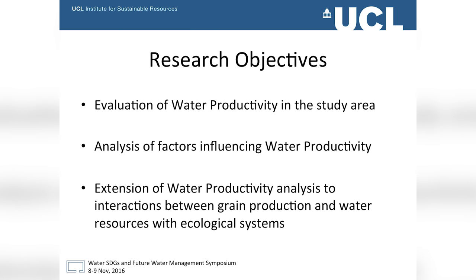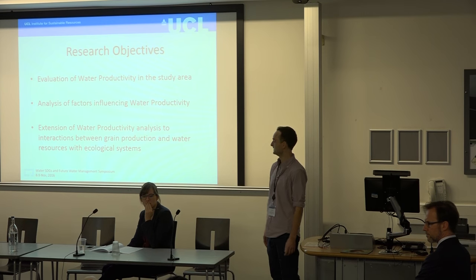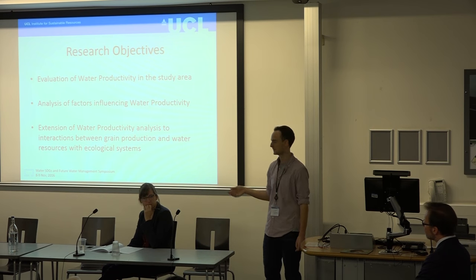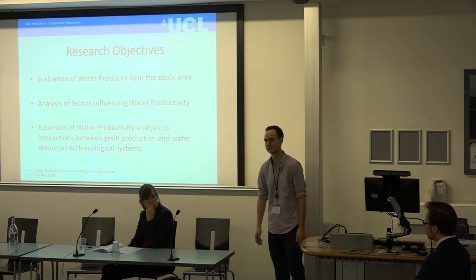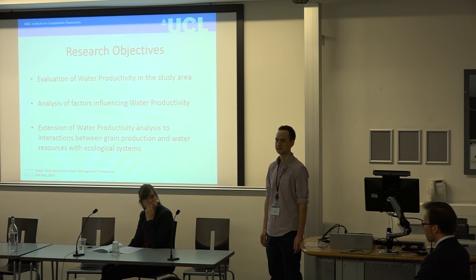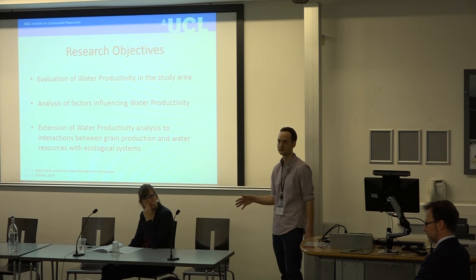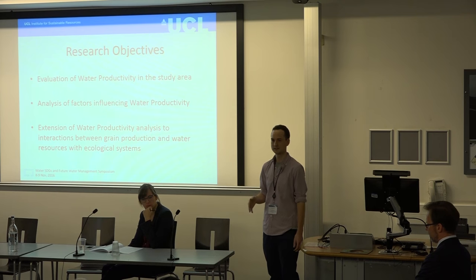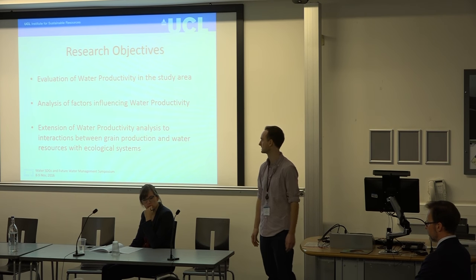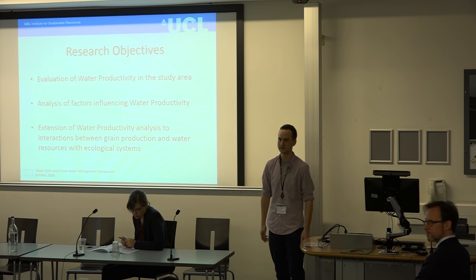The main research objectives were: first, to evaluate water productivity in the study area; second, to look at factors influencing water productivity; and third, to extend the analysis to interactions between yields, water use, and the broader ecological system — considering both water quantity and quality. The main tools were crop models developed and calibrated in Nebraska, which allowed us to calculate the maximum achievable yields each year, the optimum amount of water, and the optimum amount of fertilizers. These simulation results were then compared with actual data from farmers.